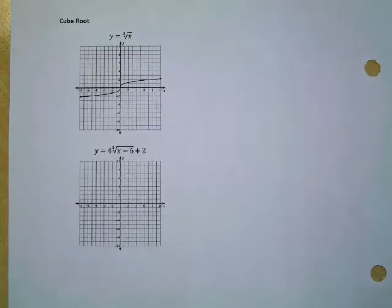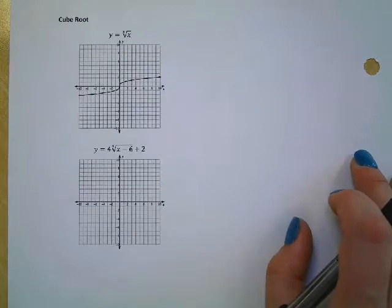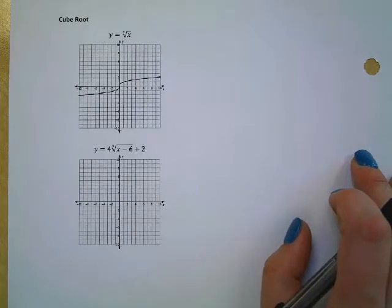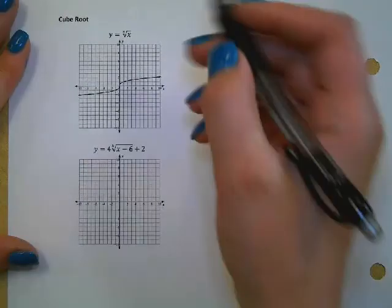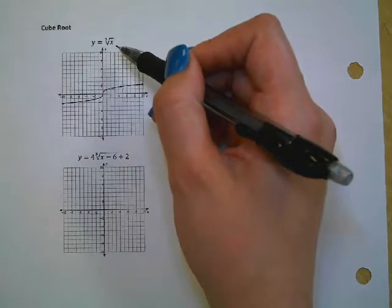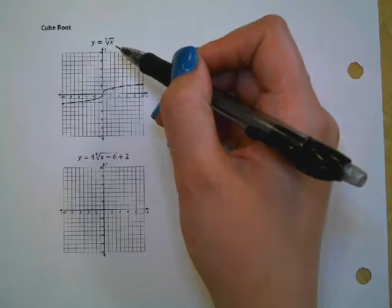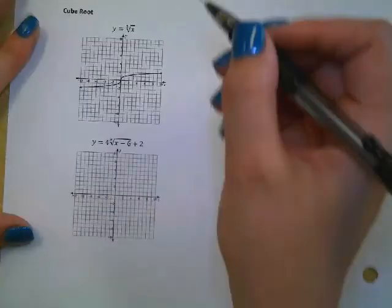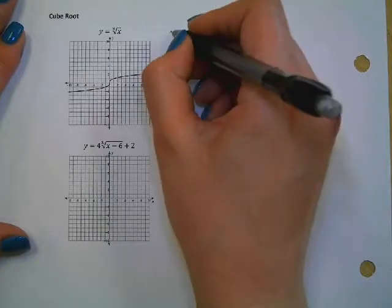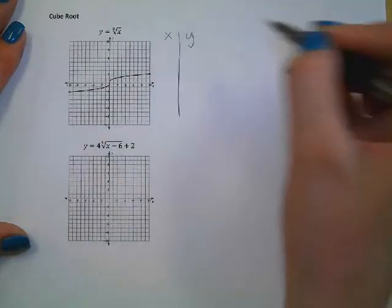We're doing the very last example. The last problem we did on the video last night was x to the third. And since the cube root of x is the inverse of that, anyone remember anything about inverses? We're going to take the same table as x to the third, but we're going to switch the x and the y values.